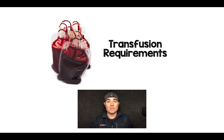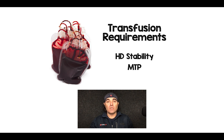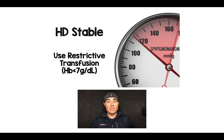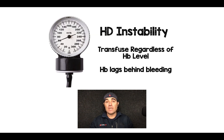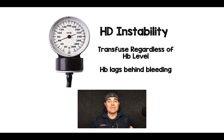For transfusion requirements, there are really only two things to ask yourself: Is my patient hemodynamically unstable, and what are my indications for massive transfusion protocol? If the patient is hemodynamically stable, we use a restrictive transfusion strategy — we only transfuse packed red blood cells when hemoglobin becomes 7 or less. In a hemodynamically unstable patient, we transfuse blood products regardless of hemoglobin, because hemoglobin tends to lag and we know the patient is losing blood.